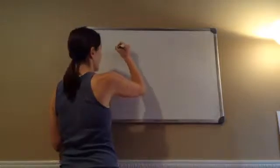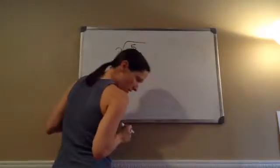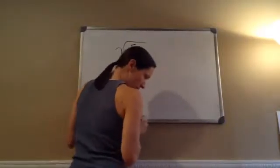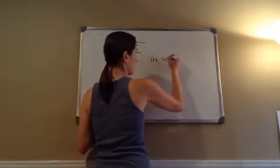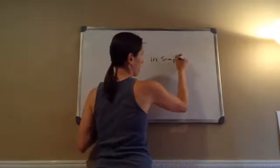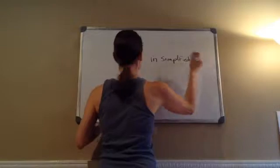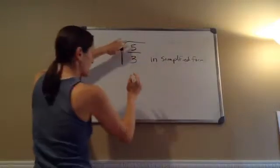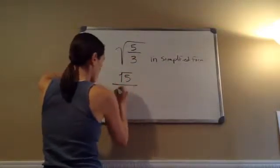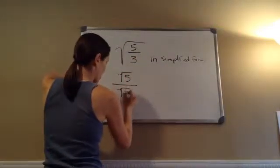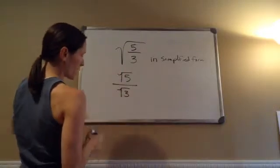Write that in simplified form. What they're wanting you to do is to take this and go square root of 5 over square root of 3 — kind of like divide it up.